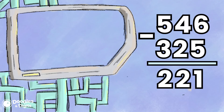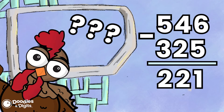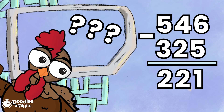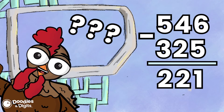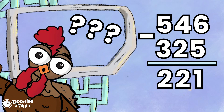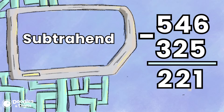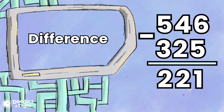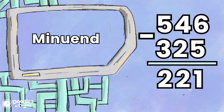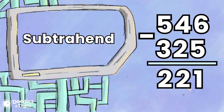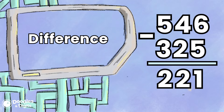What were all those fancy terms? Quick review — there are three main parts to a subtraction problem: a subtrahend, the difference, and a minuend. The minuend will be the top number, the subtrahend is what you will be subtracting, and the difference is the answer.